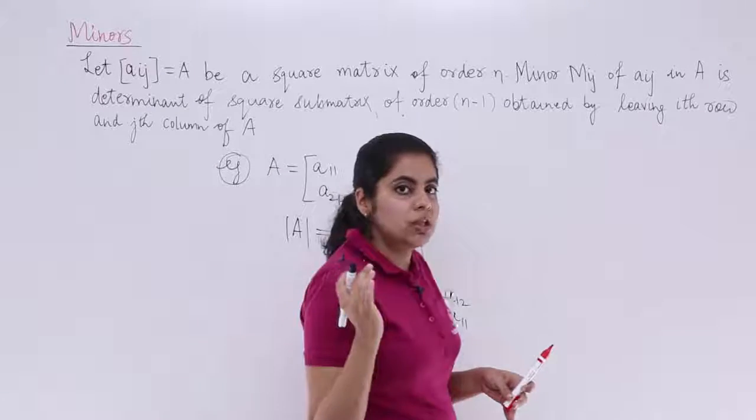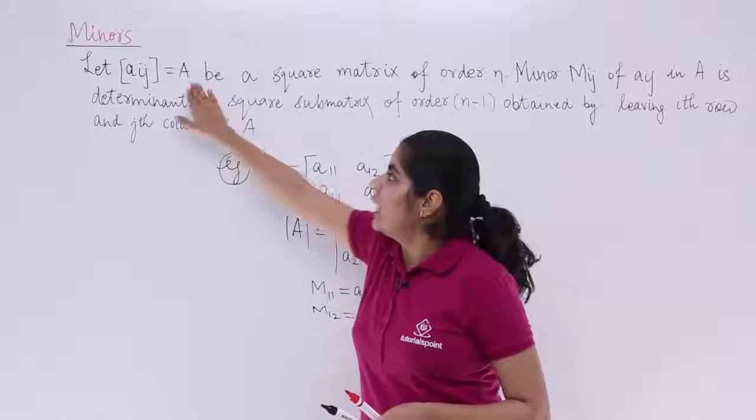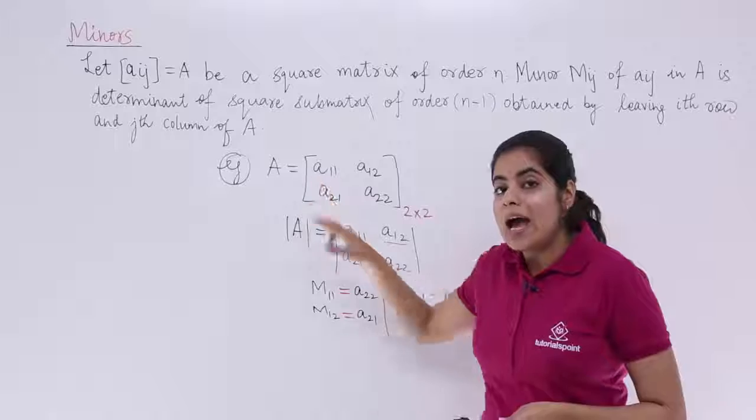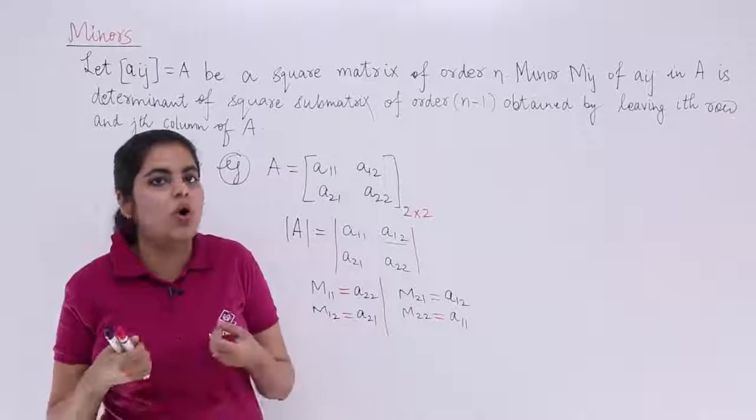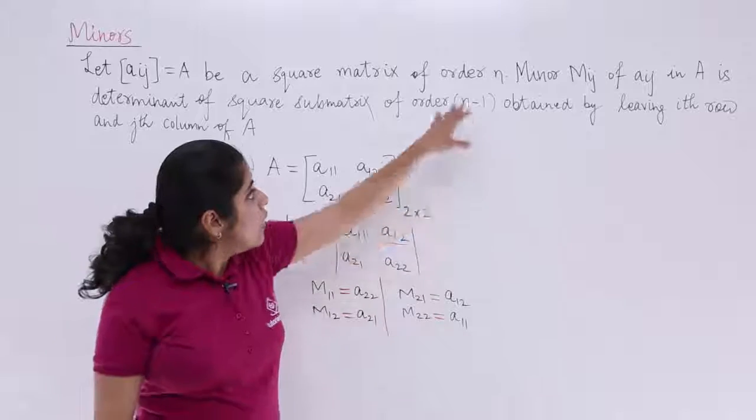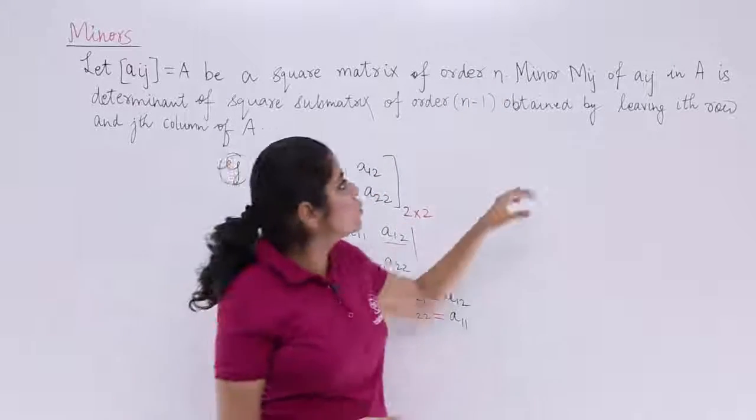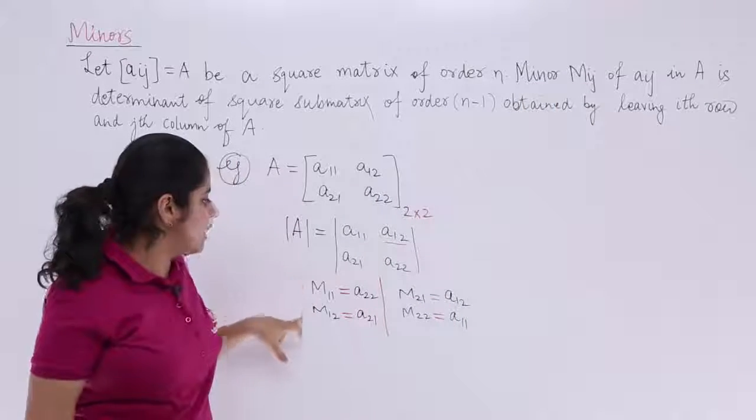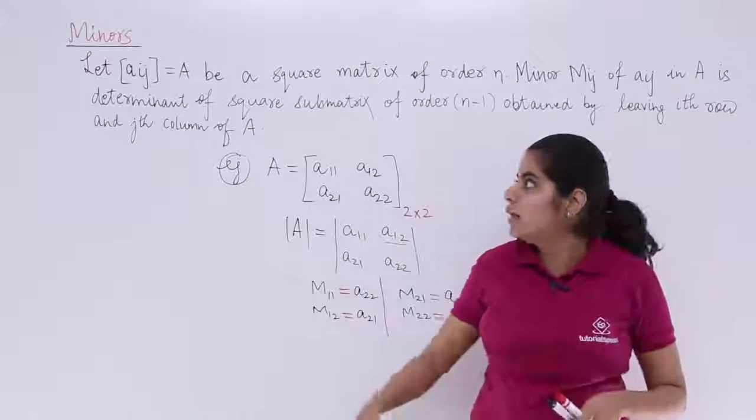Now let's read the definition when we have understood this thing. The definition says that A equals Aij be a matrix given to us, which is given to us and that has to be a square matrix only. So a 2x2 matrix or a 3x3 matrix of order N, say 2 here. In this example, we have taken order 2. Minor Mij, capital M. That is why we were using capital M.